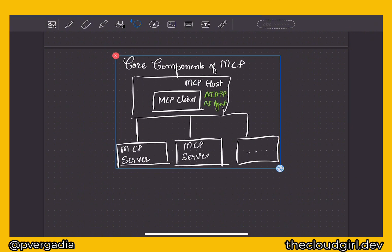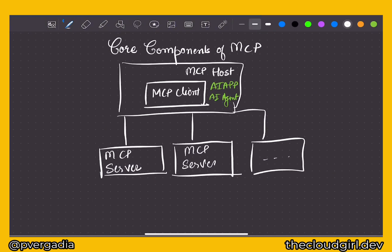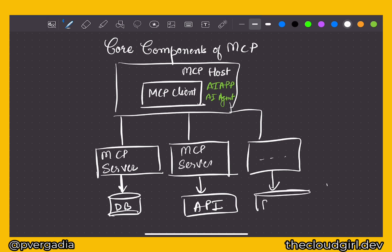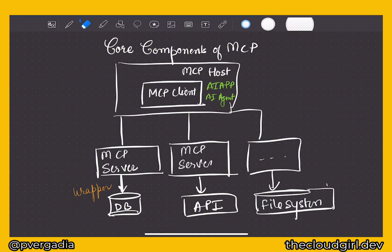Those MCP servers connect to your external data sets. The first server might connect to a database for external data retrieval. The second one talks to an API. The third one connects to a file system — and there could be many more. The data that comes from the database, APIs, and file system is wrapped into a standardized format by the MCP server for the LLM and client to work with.